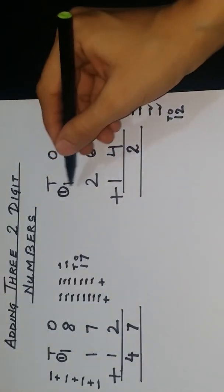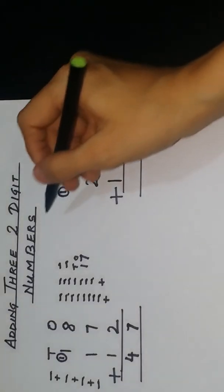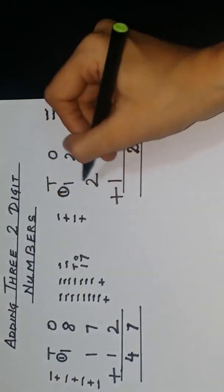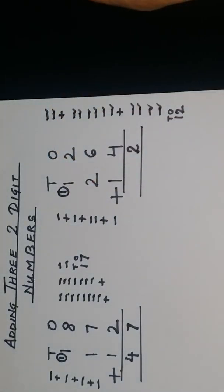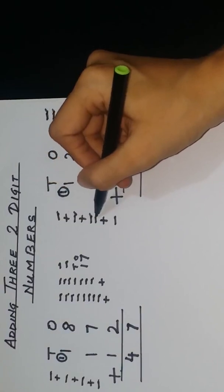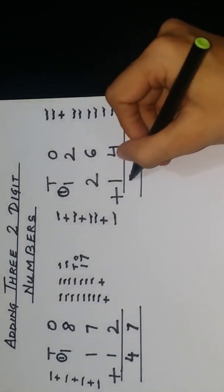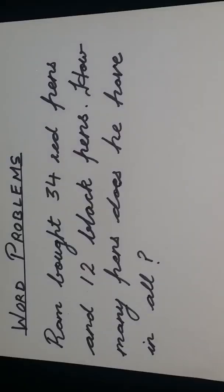Now you have to add all these, including this carried 1. For each digit draw its lines and put a plus sign: 1 line, plus 1 line, plus 2 lines, plus 1 line. Count total lines: 1, 2, 3, 4, 5. So you get 5. Your answer is 52. Now the next topic is word problems.